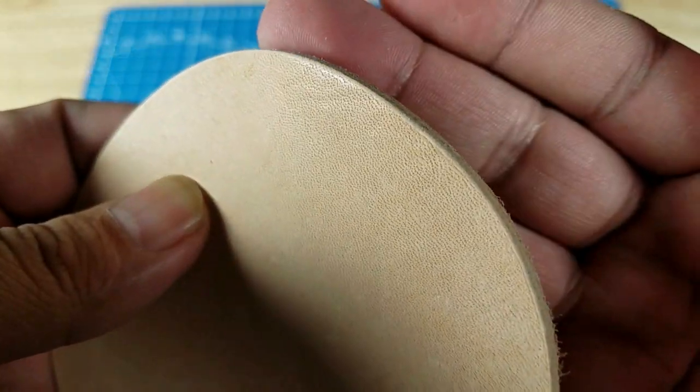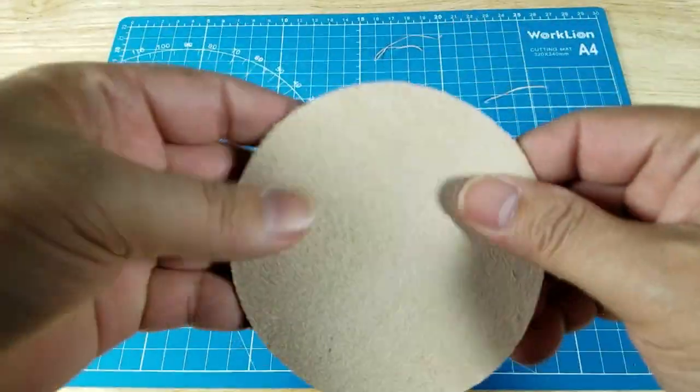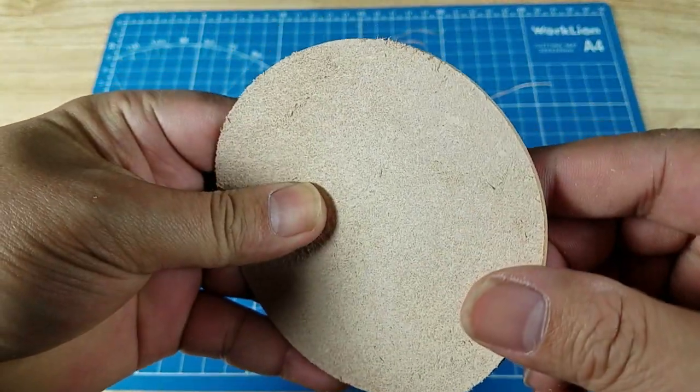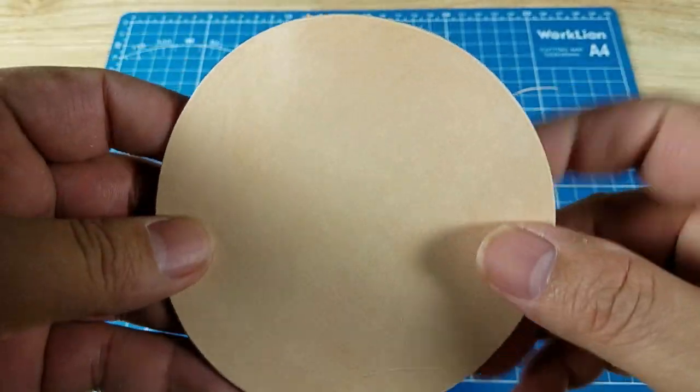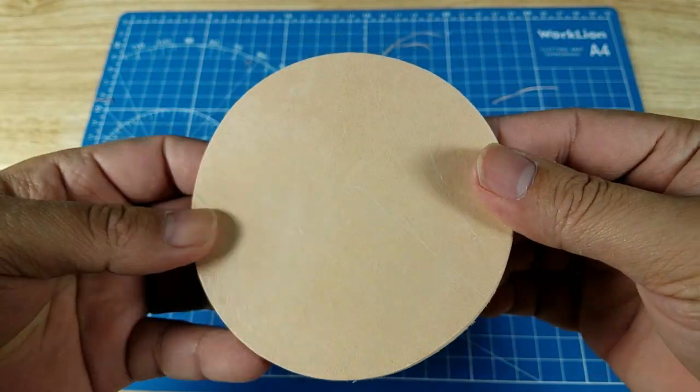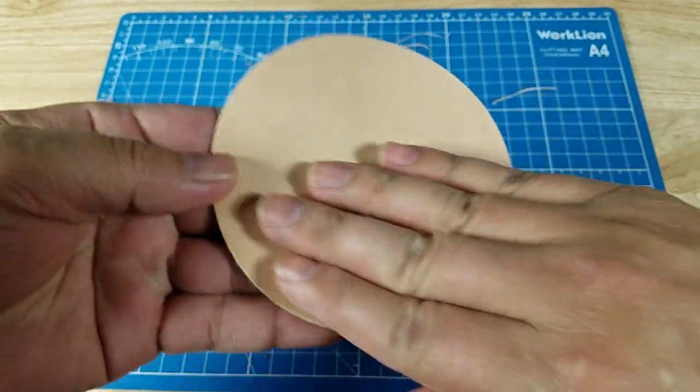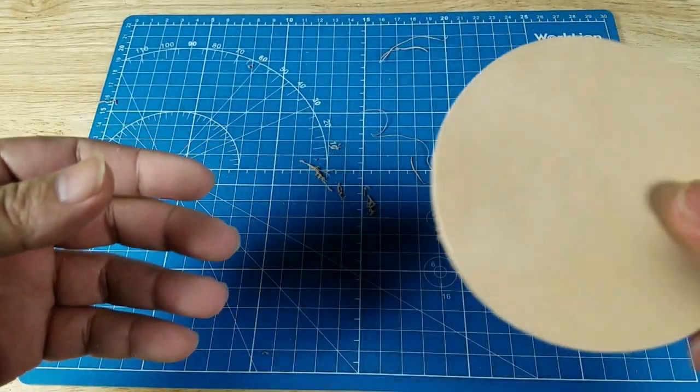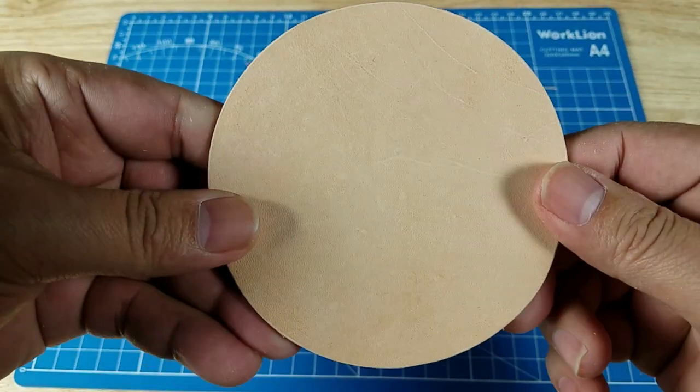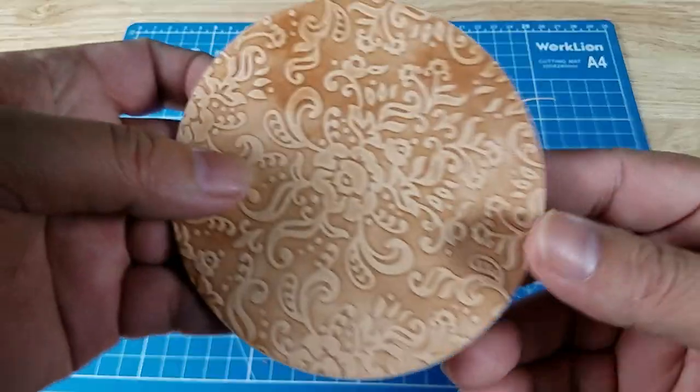It's a nice beveled edge now. I'm gonna turn it around and do the same thing on the bottom. I got both sides done with the edge beveler. Now I'm just gonna get a little water, wet this down to make it soft, and run it through the embosser.